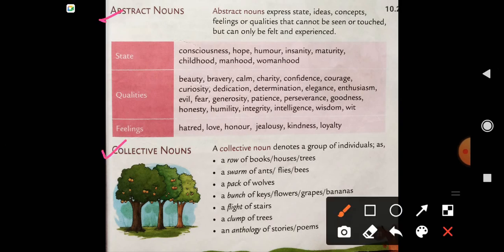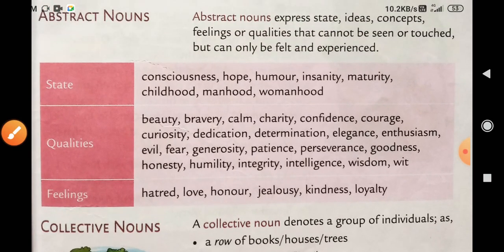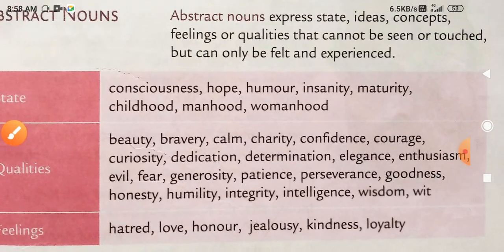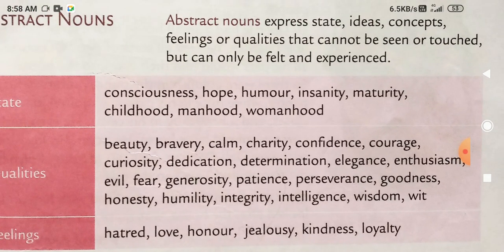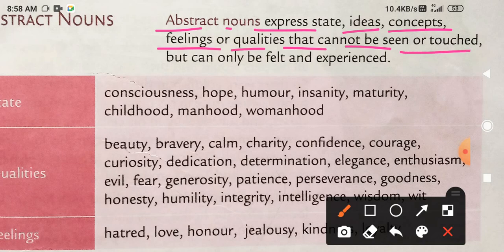So, abstract noun. Abstract nouns express state, ideas, concepts, feelings or qualities that cannot be seen or touched. What can only be felt and experienced.